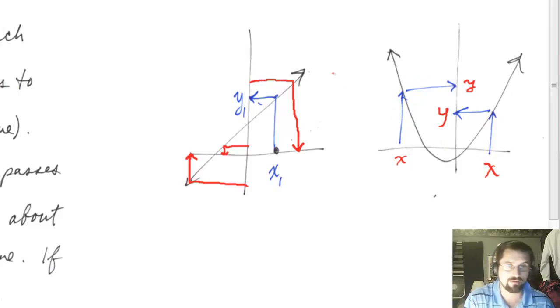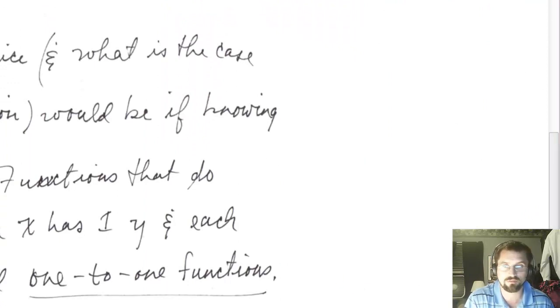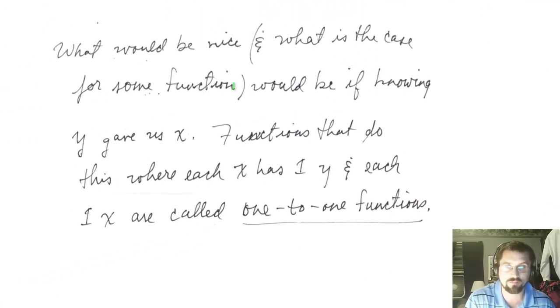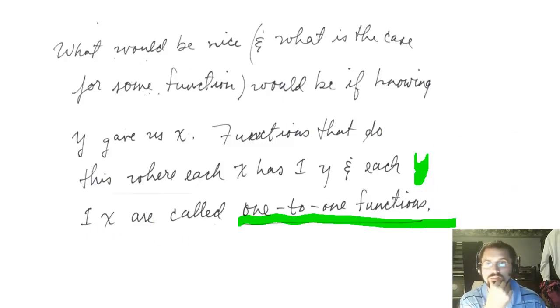Functions that have the kind of correspondence that I characterized as monogamous or one to one, functions like this, and there's plenty of functions like that, are called one to one functions. What would be nice and what is the case for some functions would be if knowing y gave us x as well. We said knowing x gives us y, well knowing y gives us x when the function is one to one. Functions that do this where each x has one y and each y has one x are called one to one functions.